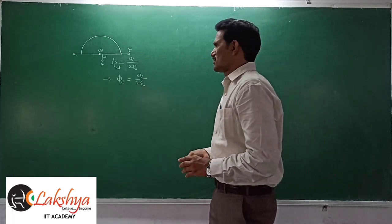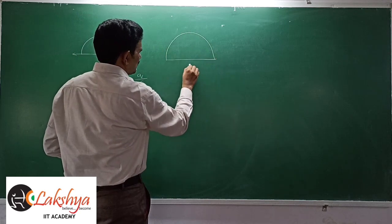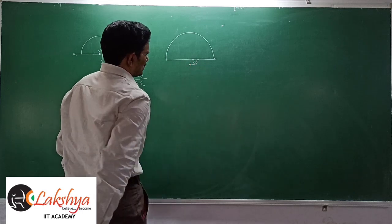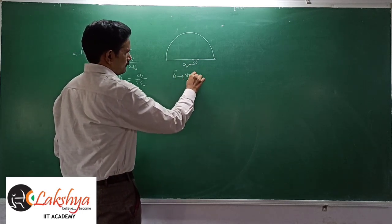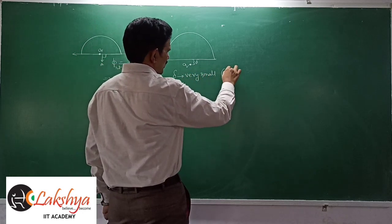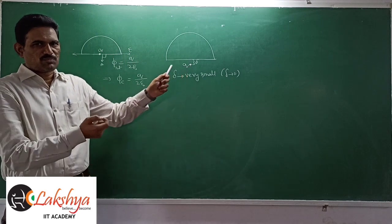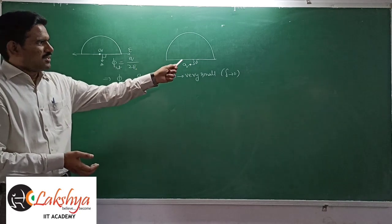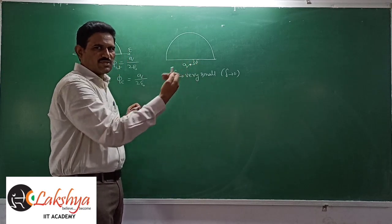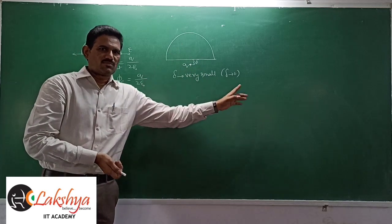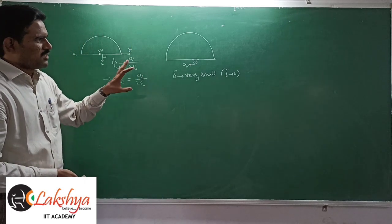Now I am explaining the case where a charge Q is placed just outside the hemispherical surface, at a very small distance delta from the center — delta tends to zero. It is very close to the center but not at the center; it is just outside the hemisphere. We need to find: the total flux, the flux through the curved surface, and the flux through the plane surface.